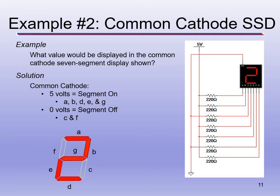When you do your schematics in MultiSIM, make sure you're choosing the correct seven-segment display — whether common cathode or common anode. Some of you will wire your circuit up perfectly, but it won't work because you designed in anode mode and then picked a common cathode seven-segment display. Pay close attention to that when you CAD this up in MultiSIM.